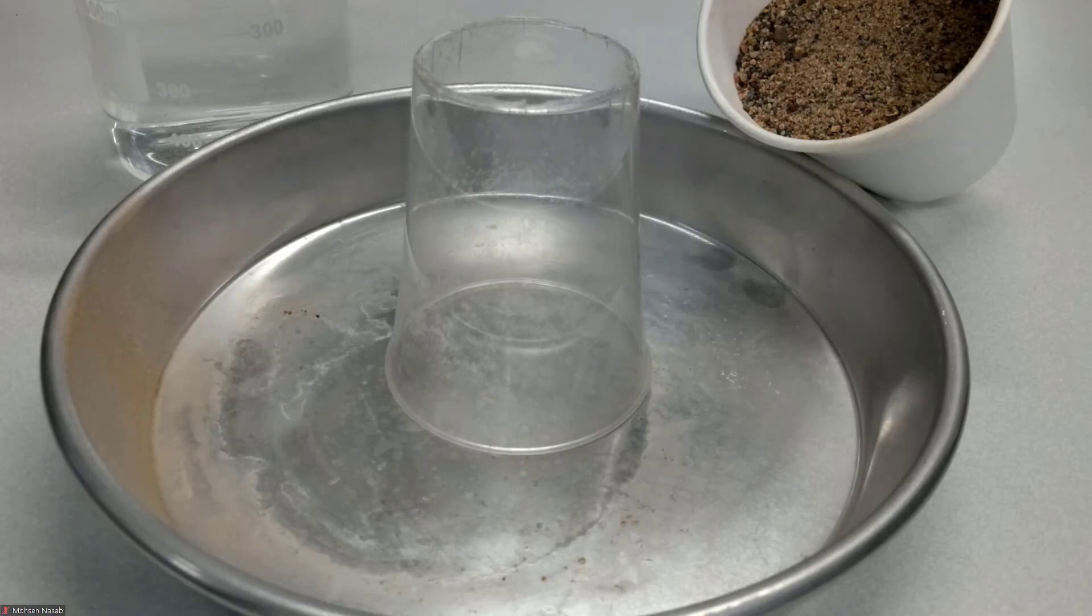Capillary action occurs naturally in soil because soil is a porous media and there are a lot of teeny tiny narrow spaces between soil particles. Let's do a quick experiment together to observe capillary action. Let me show you the experiment.